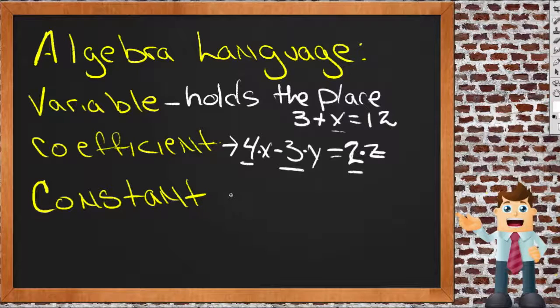So really, in practice, it ends up being the number that comes before the variable in a statement, whether it's an equation, or just a statement of numbers like 3x plus 2y.